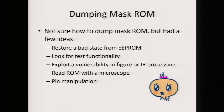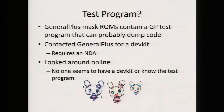Another option was to read the ROM with a microscope — one benefit of mask-ROM is that the bits, because they're manufactured into the transistors, are visible. Another option was pin manipulation — maybe if I could listen into the right pin or area on the die, I could see what instructions were being executed. I looked at the test functionality first: it turns out all General Plus microcontrollers have a mandatory test program, and I suspected it would allow code dumping. But I could not find the test program at this point, so I had to move on.